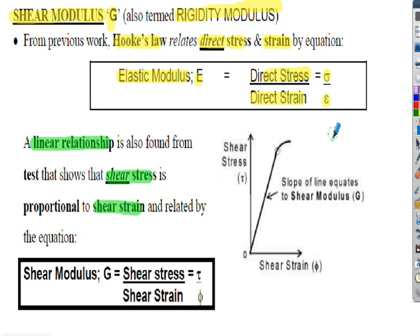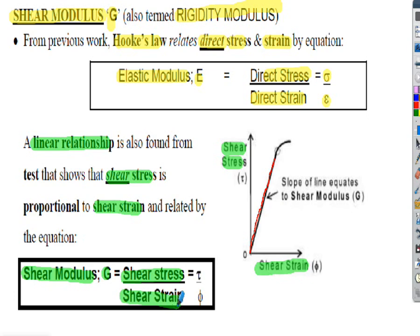If we draw a stress-strain diagram with shear stress on the vertical axis and shear strain on the horizontal axis, we find a linear relationship between the two over a certain portion of the diagram. So we can write the shear modulus symbol G as the shear stress divided by the shear strain — that would be tau divided by phi.